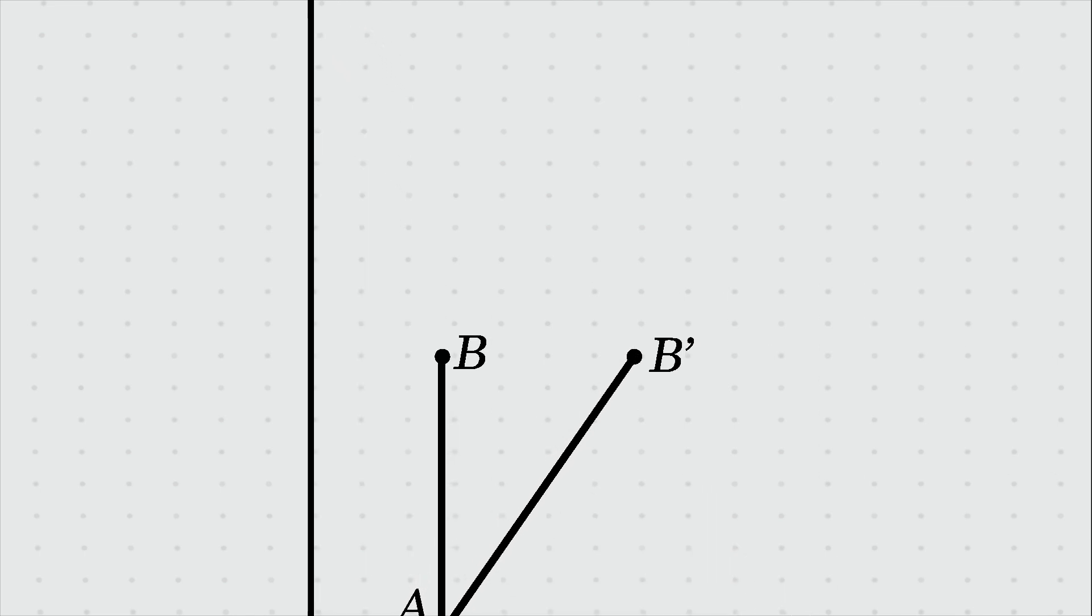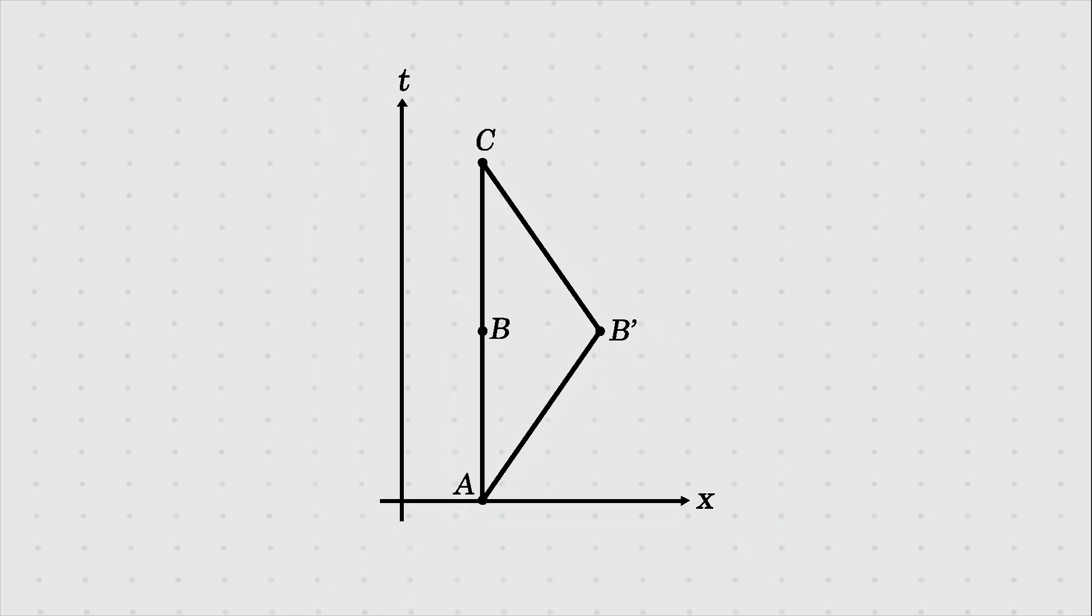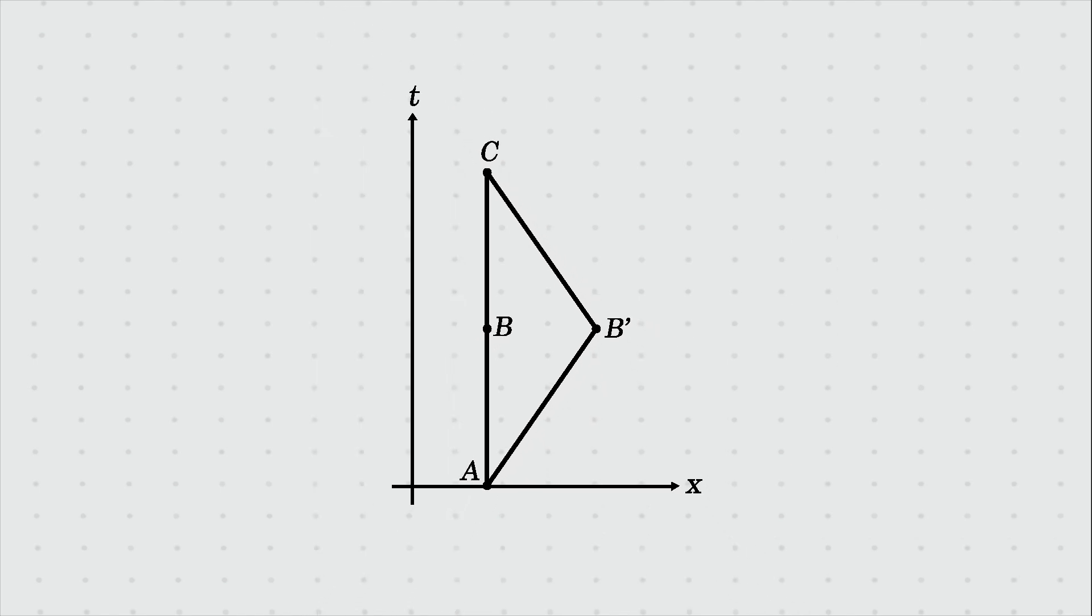In the Twin Paradox, Bob stays still, so her path is straight from point A to point C. On the other hand, Alice's journey involves non-straight paths from A to B' and then to C.